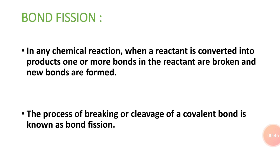In any chemical reaction, when a reactant is converted into a product, one or more bonds in the reactants are broken and new bonds are formed. When any chemical reaction takes place, the bonds in the elements of reactants are broken and different new bonds are formed — that is called the product. The new bond-formed chemical compound is called the product.